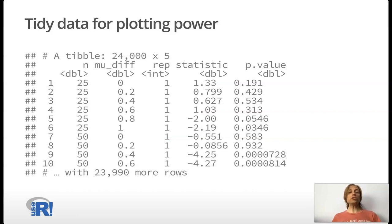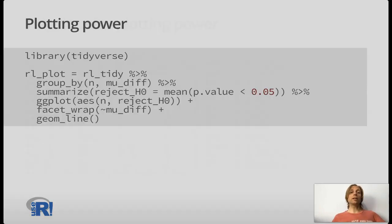What this produces is a tidy tibble that we can then use for plotting power. If you look at the first row of the tibble, you'll see that we have, for the first repetition, rep equals 1, where the difference in means is 0 and n equals 25, we've got a t-statistic of 1.33 and a p-value of 0.191. This format allows us to plot relatively easily with some simple data manipulation.